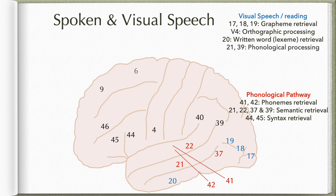This information is then transferred to area 21 in the middle temporal gyrus and area 39 for phonological processing — determining how words are pronounced. Some words are pronounced as they are spelled, like 'dog' or 'caught,' while others are pronounced differently, like 'rough,' 'though,' or 'thought.' That phonological processing is done in areas 21 and 39.